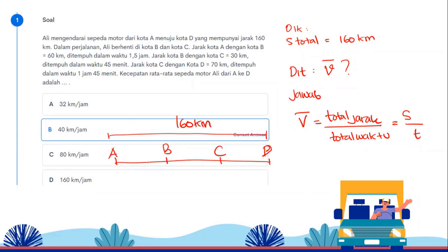It consists of A to B 60 km, then B to C 30 km, C to D 70 km. If you add them up, it's 160 km. From A to B takes 1.5 hours, then B to C takes 45 minutes, then C to D is 1 hour 45 minutes. The total distance is 160 km. You can also add 60 plus 30 plus 70, equals 160 km.